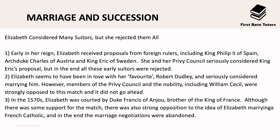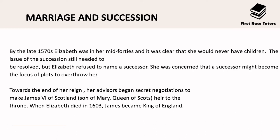In the 1570s Elizabeth was courted by Duke Francis of Anjou, a brother of the King of France. Although there was some support for the match, there was also quite a lot of opposition to the idea of Elizabeth marrying a French Catholic, and in the end marriage negotiations were abandoned. By the late 1570s Elizabeth was in her mid-40s and it was clear she wouldn't have children. She refused to name a successor, concerned that a successor might become the focus of plots to overthrow her. Towards the end of her reign her advisors began secret negotiations to make King James VI of Scotland heir to the throne, and when Elizabeth died in 1603 he did become King of England.